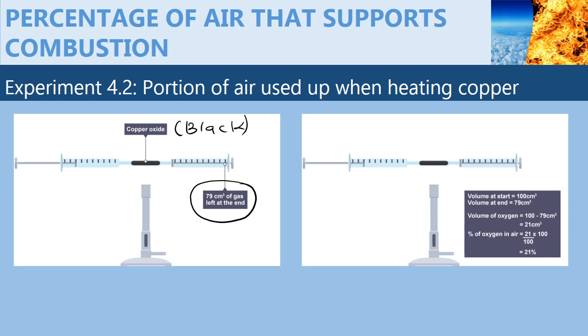And therefore, we take 100 cubic centimeters, subtract 79 cubic centimeters. We get 21 cubic centimeters divided by the initial volume, which is 100 cubic centimeters, and multiply by 100. You get 21 percent.